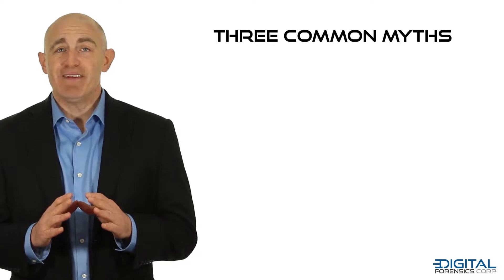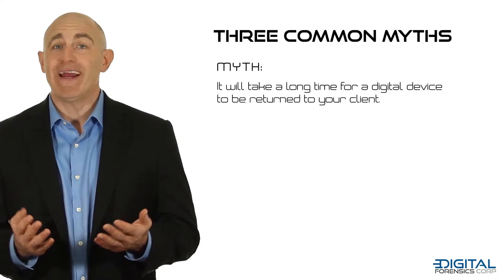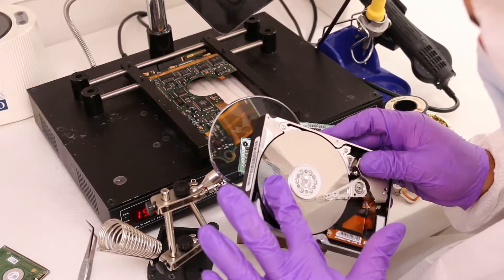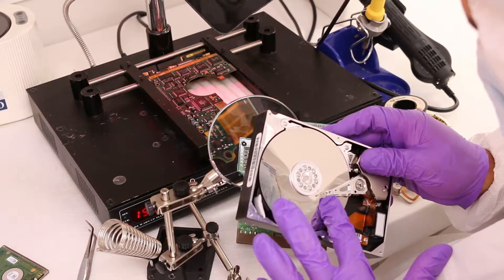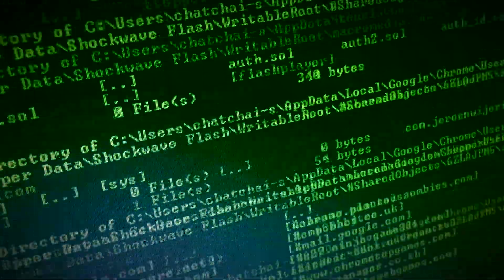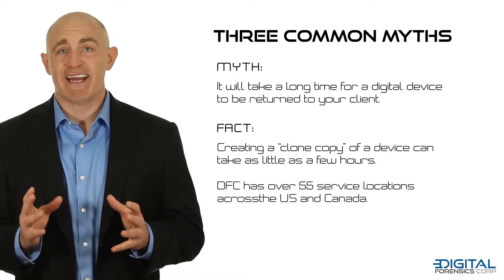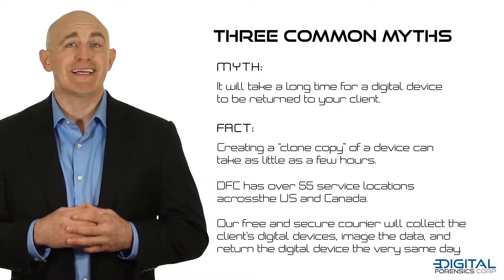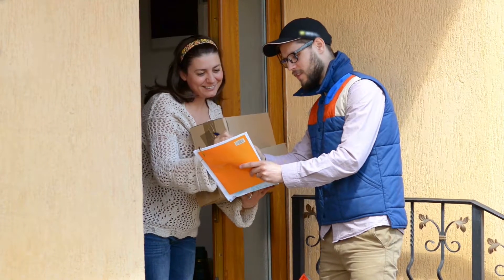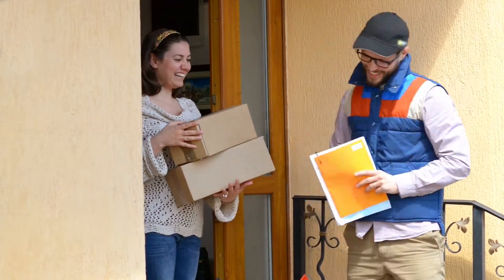Two: a client may feel that they are unable to provide a device because they worry it will take a long time for it to be returned. In truth, creating a clone copy of a hard drive or a mobile device can take as little as a few hours. A clone copy is an exact digital copy of the device, which contains a sector-by-sector duplicate of every single bit of information on the device. It's what allows our technicians to recover information that the subject has deleted. DFC has over 55 service locations across the US and Canada. Our free and secure courier will collect the client's devices, image the data, and return the device the very same day. If your client is not able to remove a hard drive from a computer, our couriers can pick up the entire machine, make a clone copy, and return it just as easily.